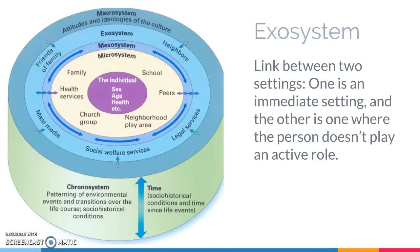The exosystem gets a little bit more complicated. This is now a link between two settings — one that you have an immediate role in and one that you don't. So for parents, maybe it's the relationship between the parent's job and the kid's school. If the parents have really fluctuating work hours or have to work very long hours, the child is not directly involved in the parent's workplace, but this will affect things like whether the parents are able to volunteer in the kid's school. The Anne Arundel Community College Board of Trustees would be an example of an exosystem for you — most of you have probably never met the trustees, but they do affect your immediate environment because they affect your tuition and fees, who we're going to hire, college policies, things like that. So that's your exosystem.